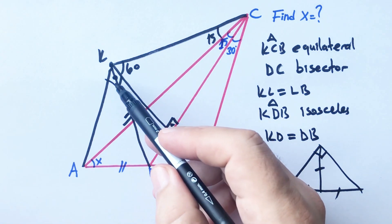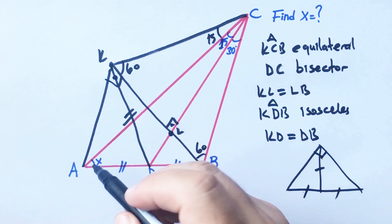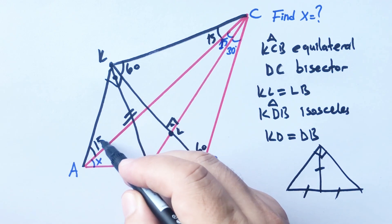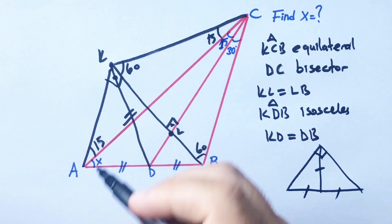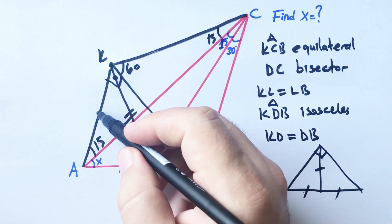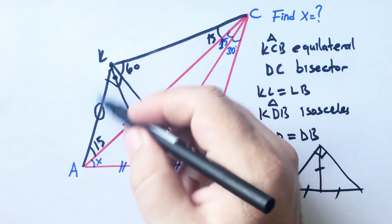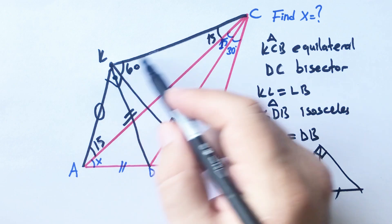So in triangle AKC, here must be 15 degrees. Therefore, AK must equal KC.